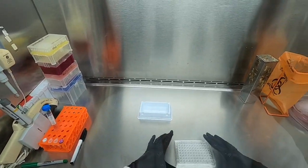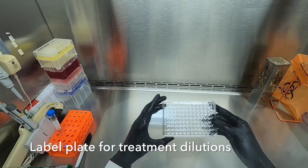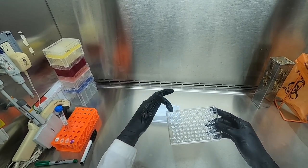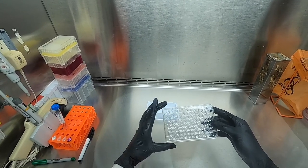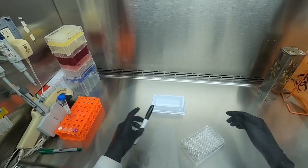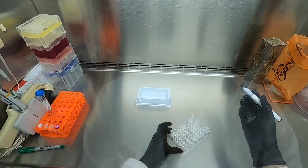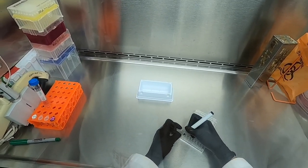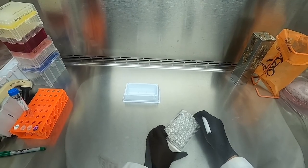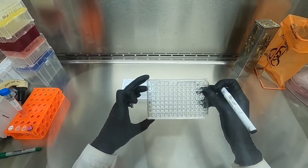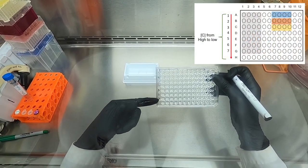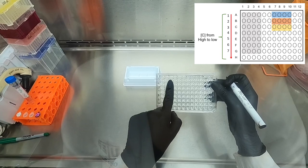Instead of using micro centrifuge tubes in order to make our serial dilutions, we will be using a 96-well plate in order to easily transfer the concentration gradients from one plate to another using our multi-channel pipetter. We have now labeled our plate with seven different concentrations and four different replicates.